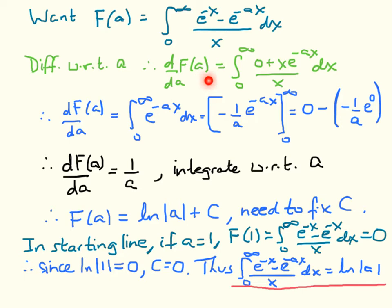The derivative with respect to a of our integral result is given by this expression. The x on the bottom, which made this a difficult-looking integral, now cancels with the x from differentiation. That means we are left with the integral from 0 to infinity of e^(−ax). Although that's an improper integral, it converges because e^(−ax), since a is positive, falls off fast as x becomes large. So the derivative with respect to a of the result we want equals the integral from 0 to infinity of e^(−ax).